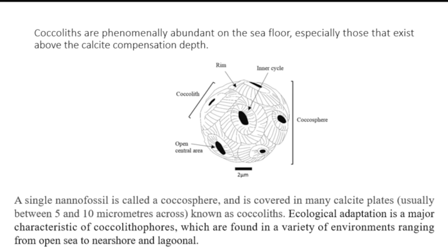Ini adalah body part-nya secara general. Size-nya biasanya tidak lebih dari 20 mikrometer, atau paling besar yang pernah ditemukan itu ada 25-28 mikrometer. Secara general, dia terdiri dari rim, kemudian ada inner cycle-nya, dan ada open central area. Biasanya di dalam open central area itulah fitoplankton atau organisme tersebut hidup atau tinggal. Secara ekologi, environment change-nya itu dari open sea sampai dengan lagoon itu masih ditemukan nanofosil, dan sangat mudah untuk menganalisisnya dan diaplikasikan untuk berbagai kondisi ekologi maupun untuk menentukan paleoenvironment condition pada umur-umur tertentu.